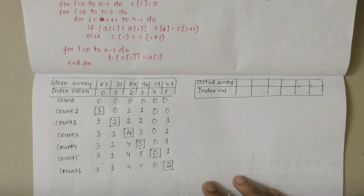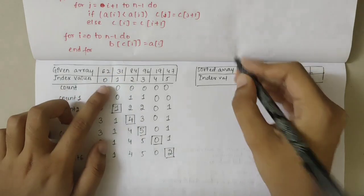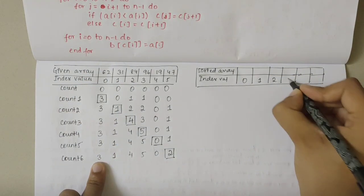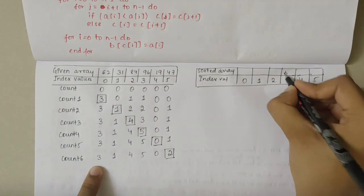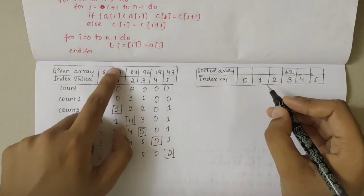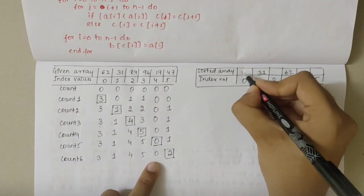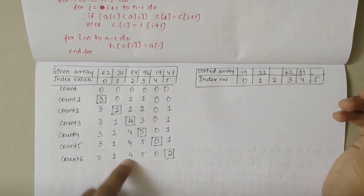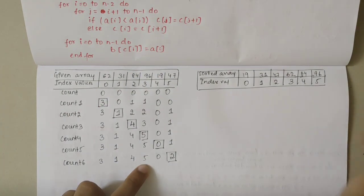The final count values obtained are: 62 is at position 3, 31 is at position 1, 19 is at position 0, 84 is at position 4, 96 is at position 5, and 47 is at position 2. Writing index values 0 through 5, we place: 19 at 0, 31 at 1, 47 at 2, 62 at 3, 84 at 4, and 96 at 5. This gives us the sorted array.